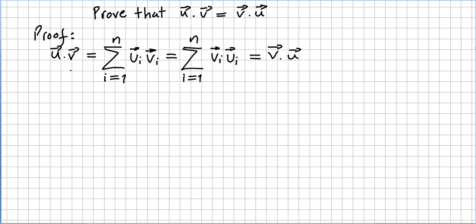u times v by definition is the sum from i equals 1 to n of u_i times v_i. Of course u_i and v_i are in the argument of the sum, so they are commutative. So this is equal to the sum from i equals 1 to n of v_i times u_i, and this is the definition of v times u. So u times v equals v times u, and that concludes the proof.